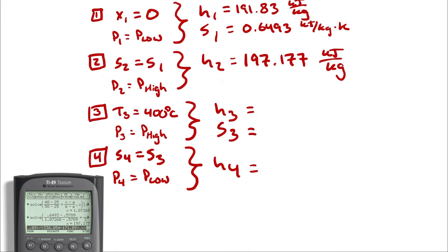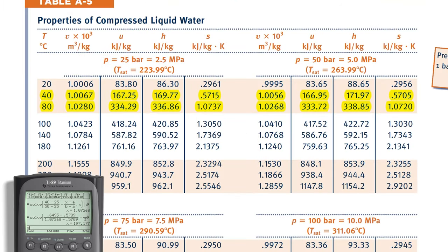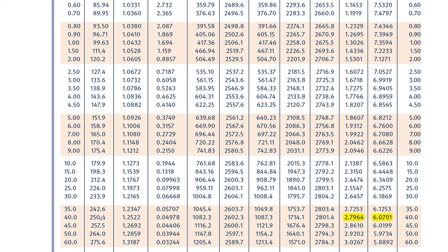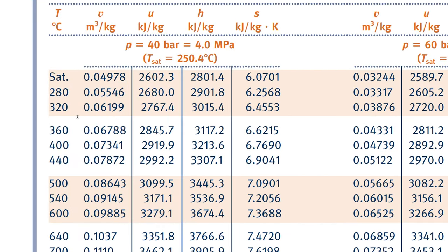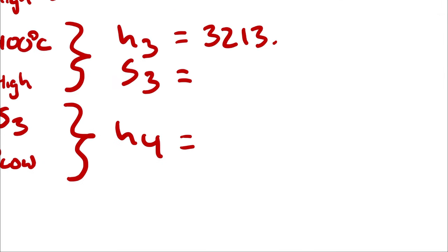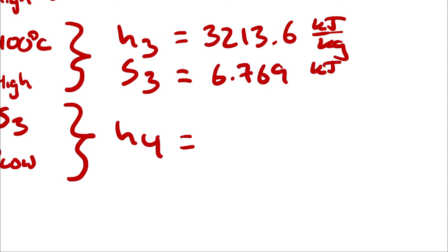At state 3, with T3 equals 400°C and P3 equals 40 bar, we check the saturation temperature at 40 bar, which is 250.4°C. Since 400°C exceeds that, we have a superheated vapor. The superheated water vapor tables have a 40 bar subtable, so H3 equals 3213.6 kJ/kg and S3 equals 6.769 kJ/(kg·K) directly from the table.